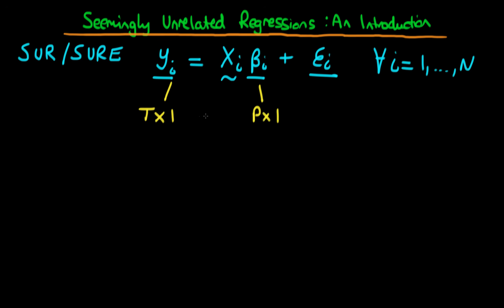And beta_i here might be, let's say, a P by one vector. So that would mean that X_i in this example is gonna be a T by P vector. So that when we multiply these two matrices together, we're gonna get a T by one vector out as well. And obviously, E_i is also gonna be a T by one vector as well.